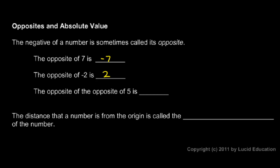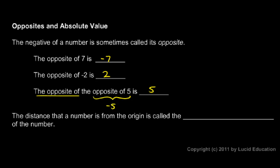Now look at this: the opposite of the opposite of 5. Well, that would just be 5. Because the opposite of 5 is negative 5, and the opposite of that is simply 5. So the opposite of a number is simply the number on the other side of the origin — the other side of 0 on the number line.